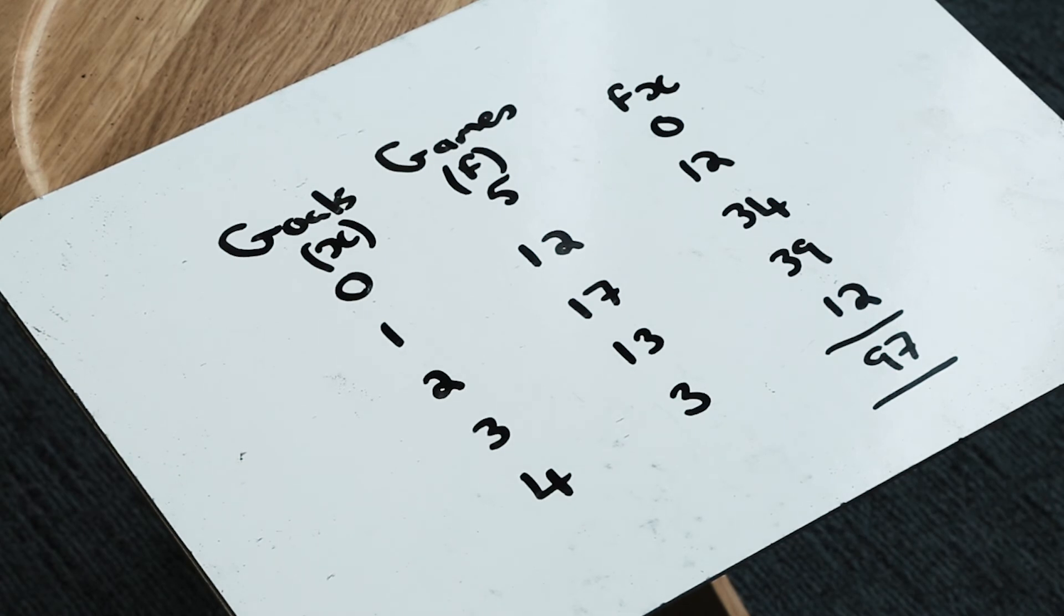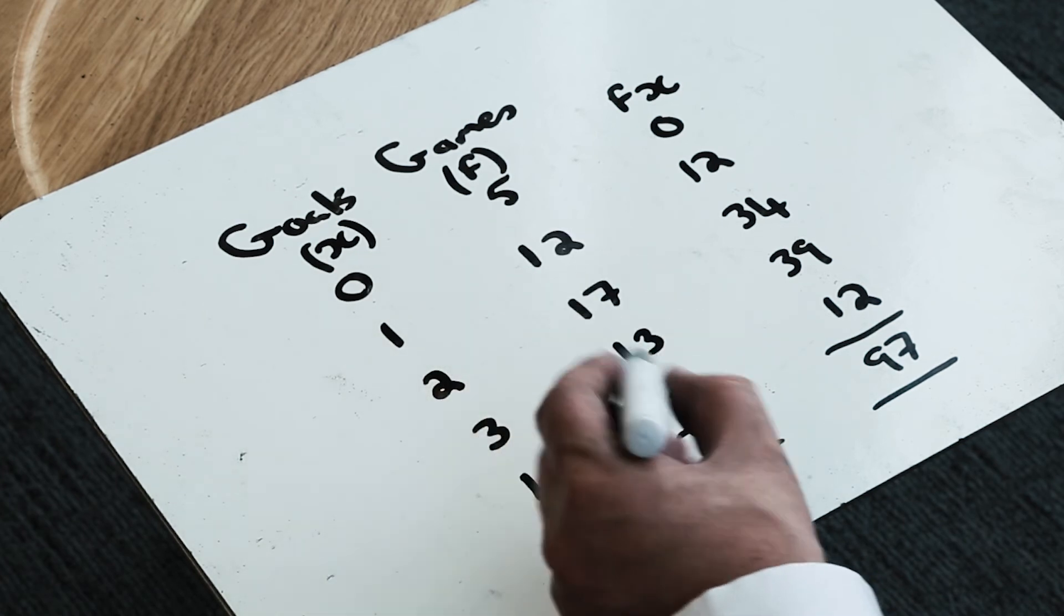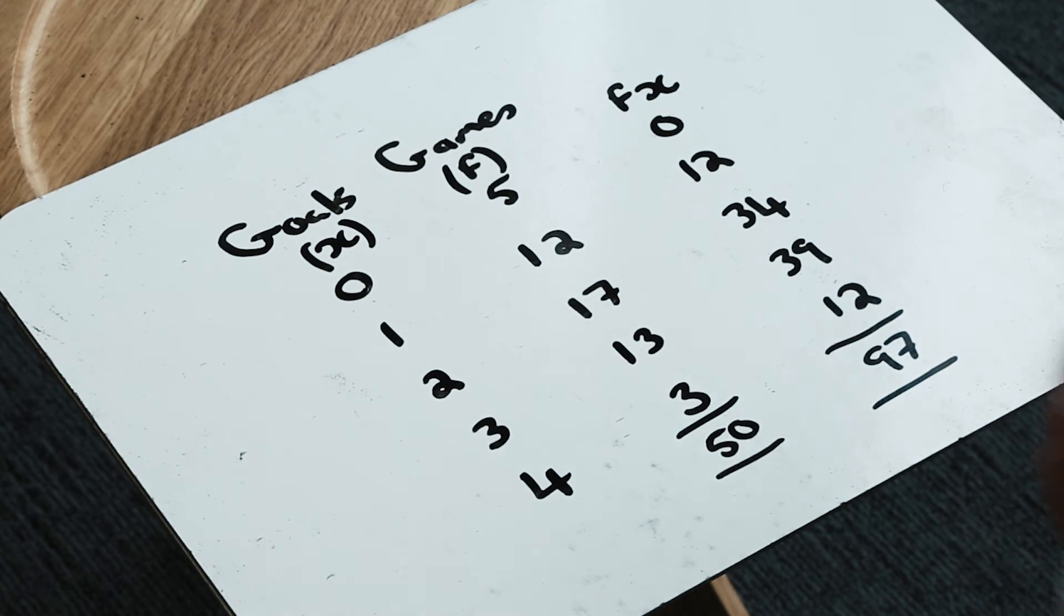I'm going to look at the number of games that I've played here. Well, 5 and 12 makes 17, another 17 makes 34, 47, and 50. So I've got 50 games here.